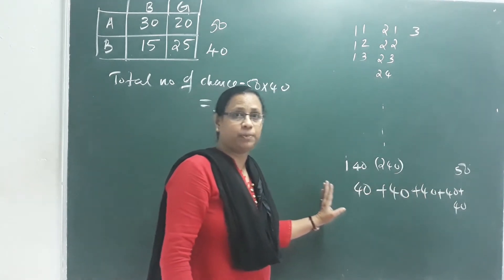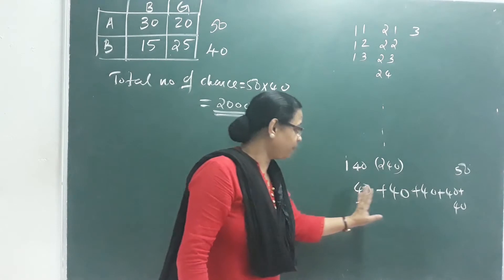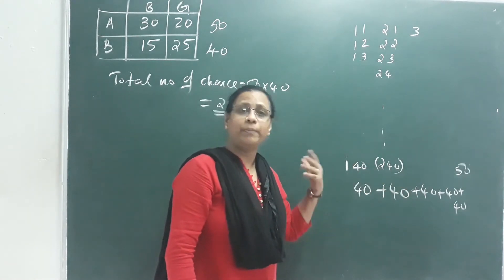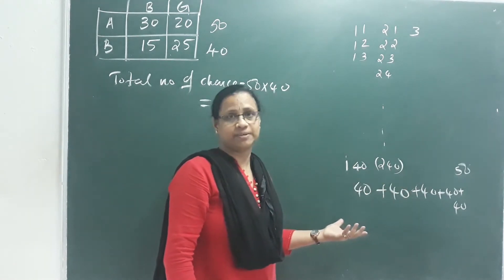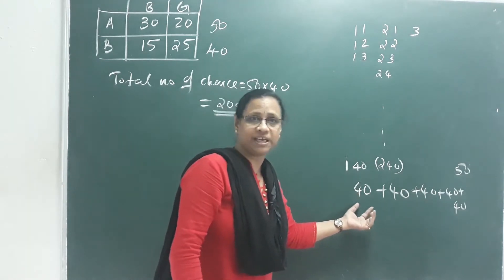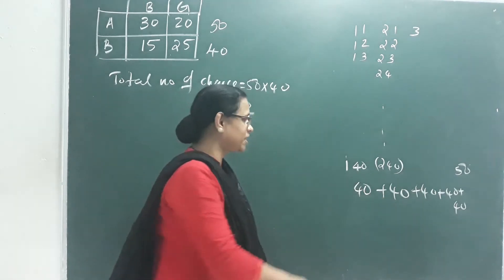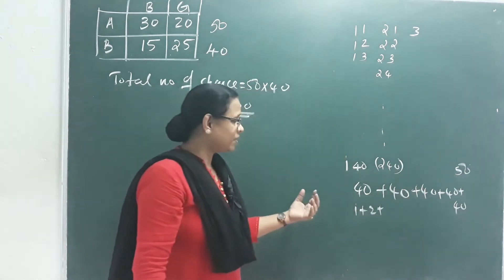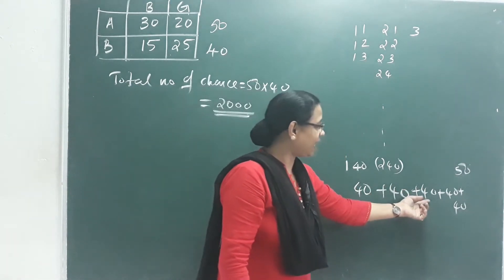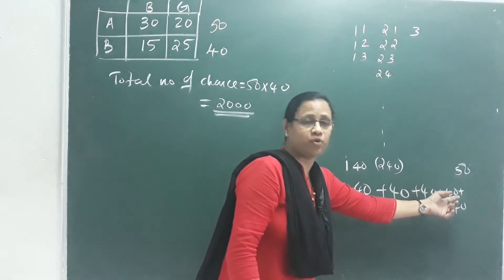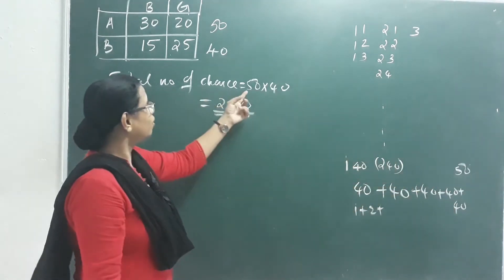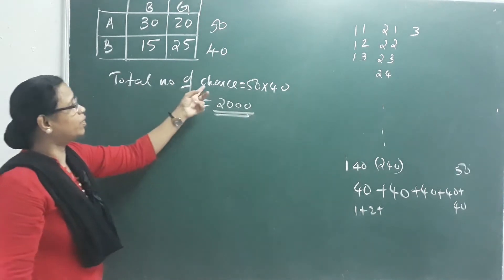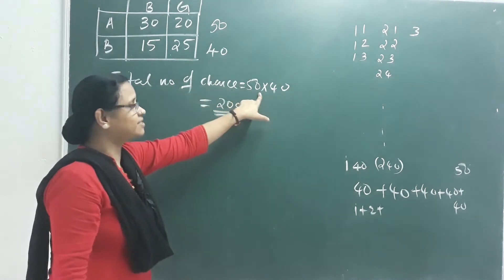We have learned how to do the multiplication theorem, which is easy to use. Using the multiplication theorem: 40 into 50 equals 2000. That means the total number of chances is 2000.